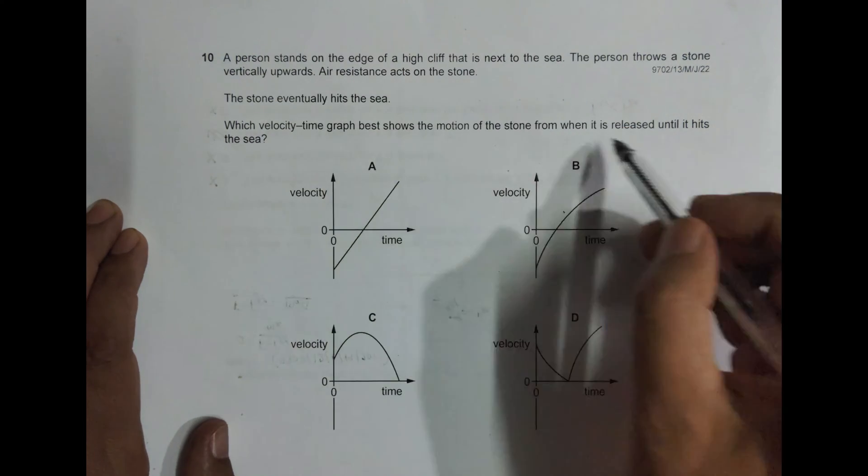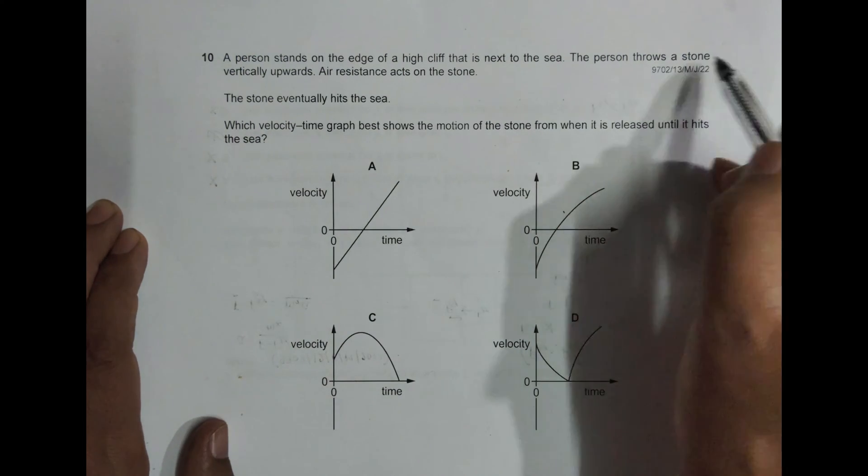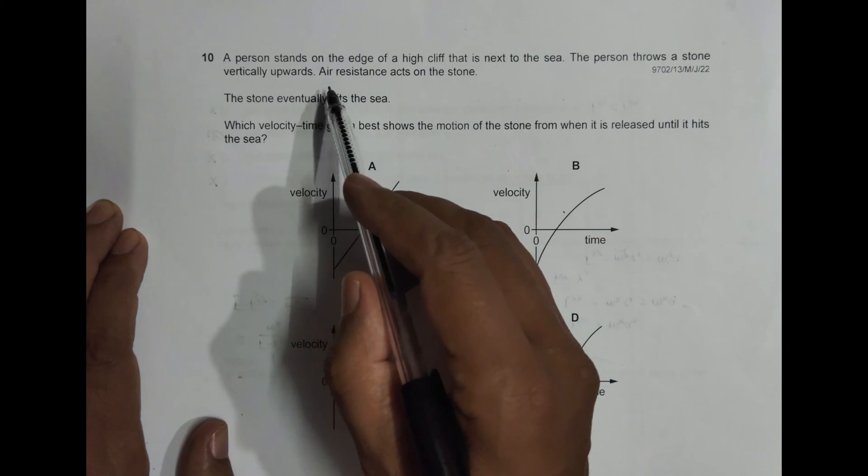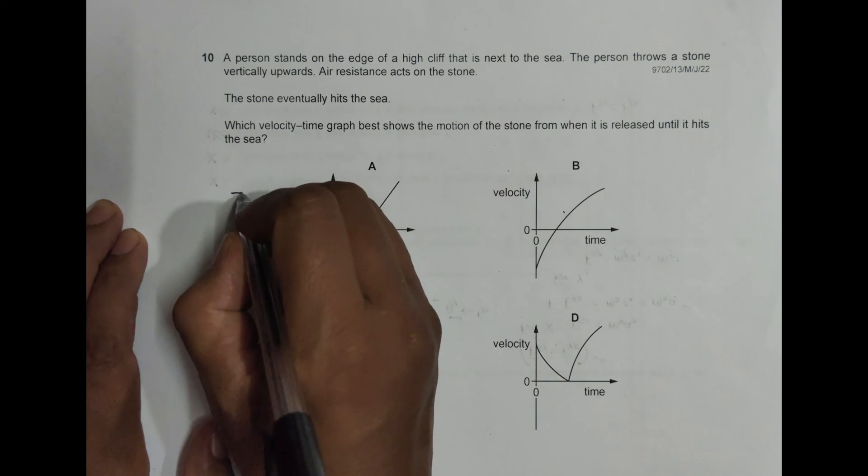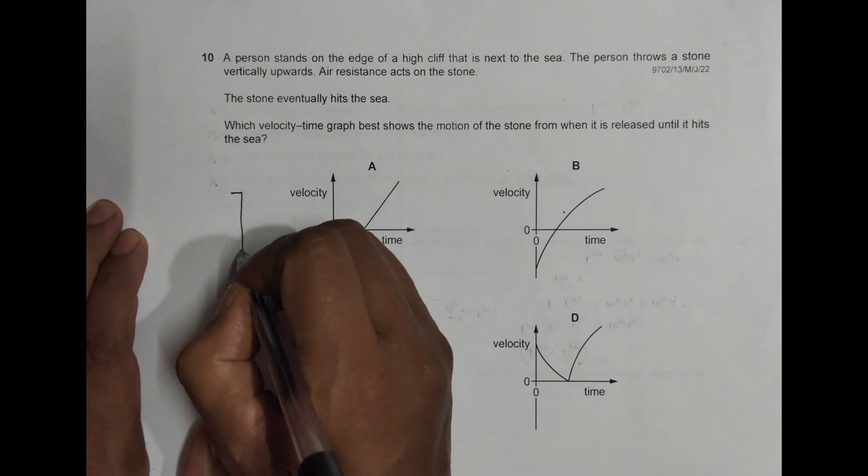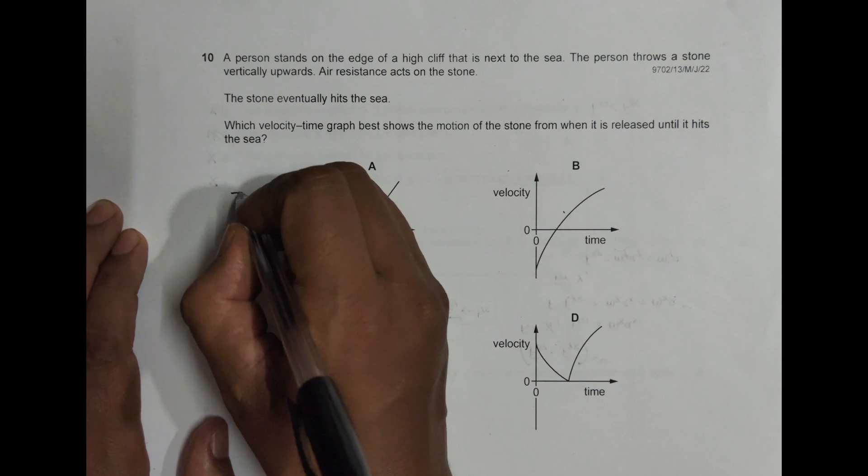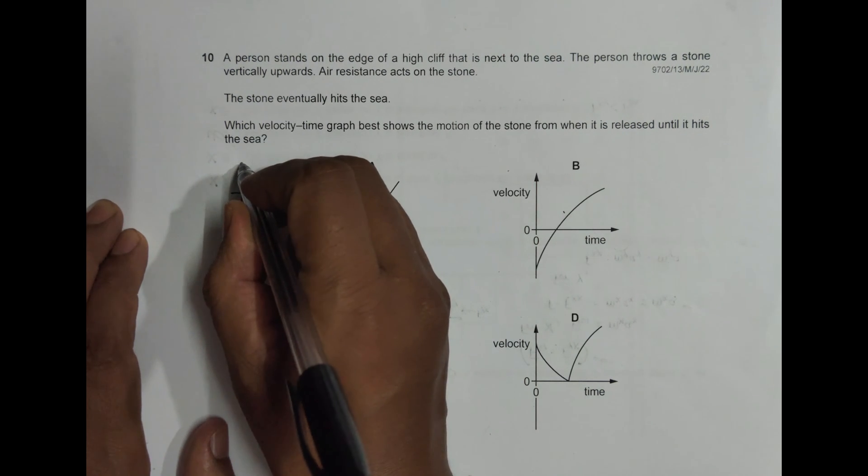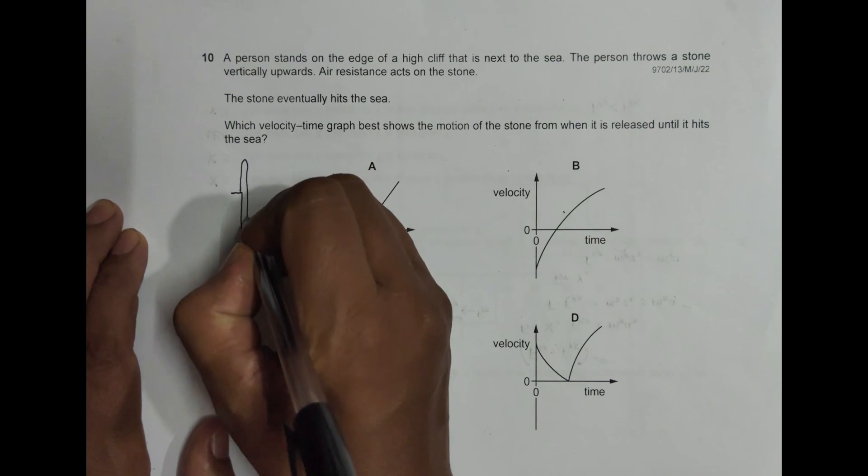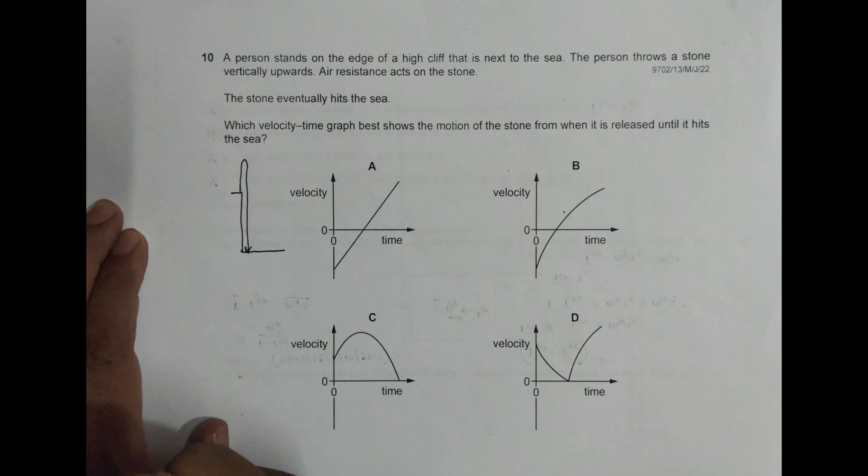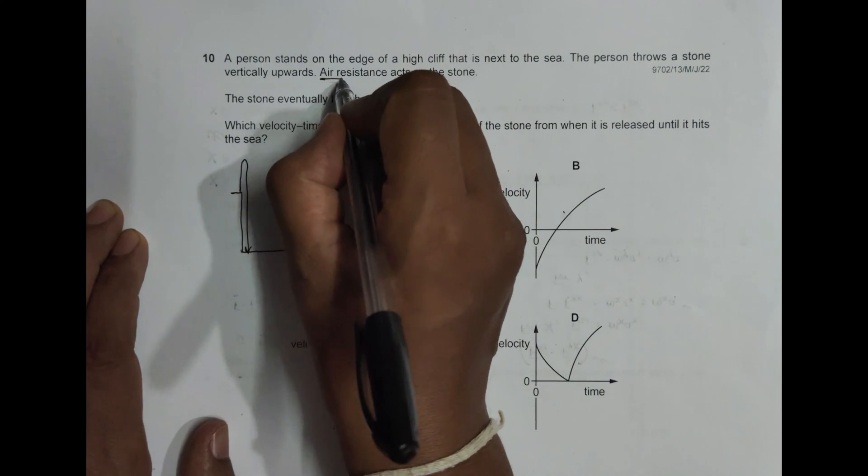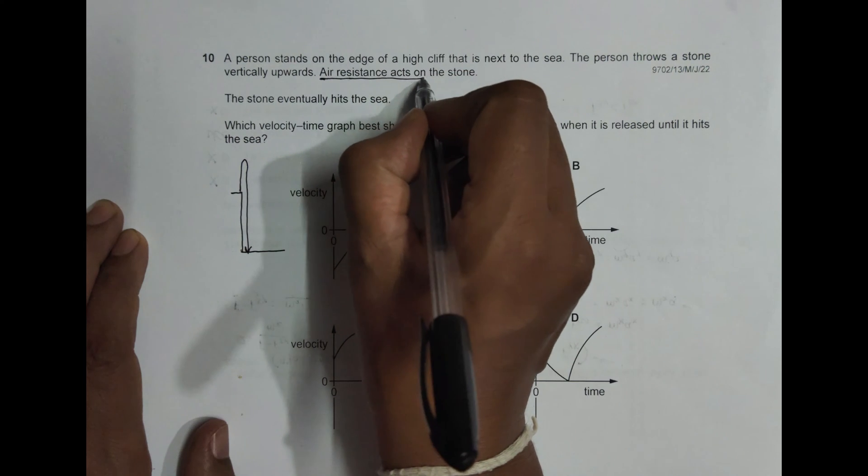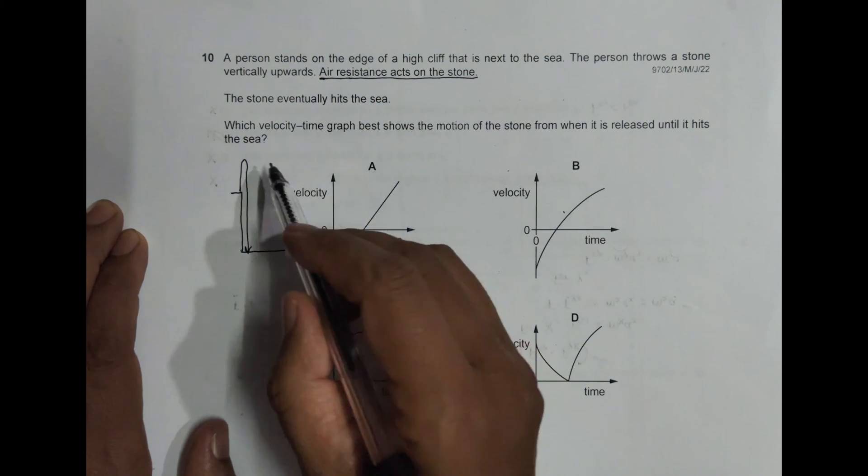The person throws a stone vertically upward. Air resistance acts on the stone. So this is the edge of the cliff - the person throws a stone like this, and it will ultimately come back and hit the sea. We have to account for the fact that there is air resistance acting on it.